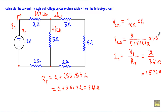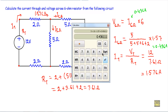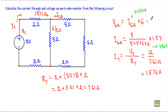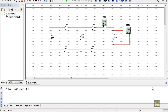Multiplying by 1.576, I get I6Ω = 0.436 ampere. Now to calculate V6Ω: 0.436 ampere × 6 ohm = 2.6167 volt.